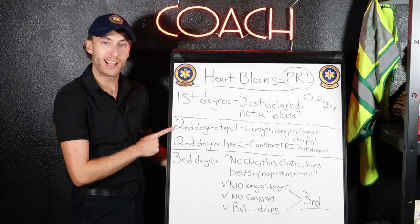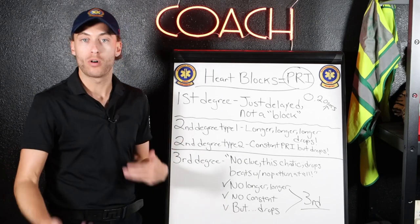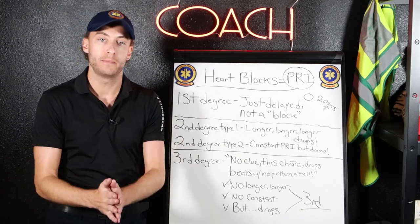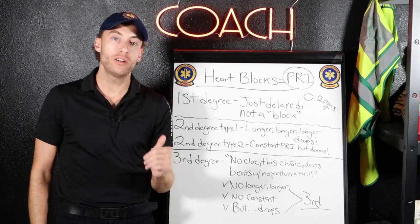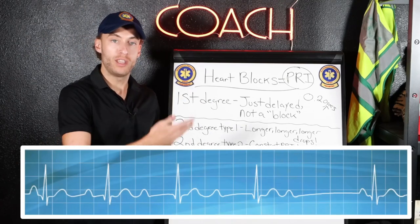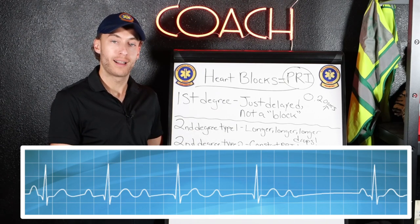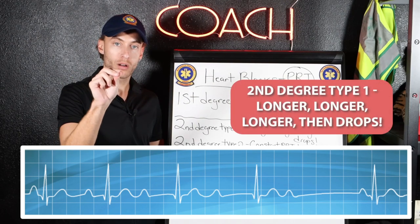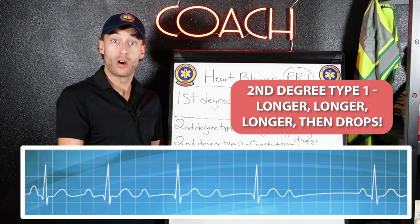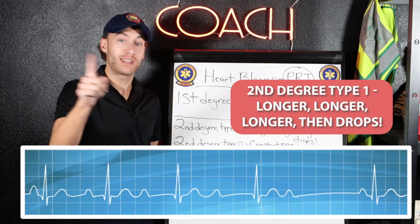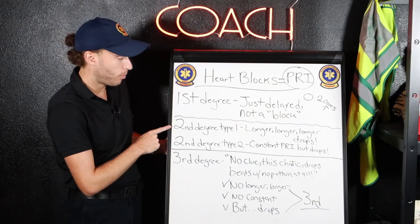The second degree type 1, also known as Wenckebach, also known as 'longer, longer, longer drops.' With the second degree type 1, you'll notice the PR interval gets longer and longer and longer, and then a beat will just drop — a P wave with no QRS. Then it does it again: longer and longer and longer and drops a beat. That is second degree type 1, also known as Wenckebach.